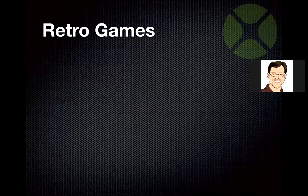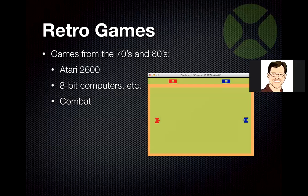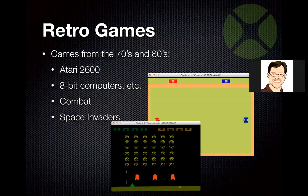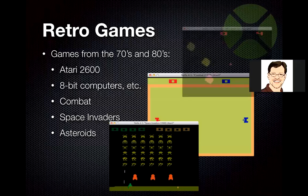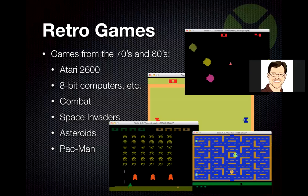So what exactly is a retro game? I consider it to be games from the 70s and 80s — games you may have played on an Atari 2600 or on older 8-bit computers like the Commodore 64, Atari computers, Texas Instruments computers, that sort of thing. Some fun examples are Combat, which is what we're going to try and make in Zojo today. Other types of games in this genre include Space Invaders, Asteroids, and even Pac-Man, which on the Atari 2600 was kind of bad, but there it is in all its glory.